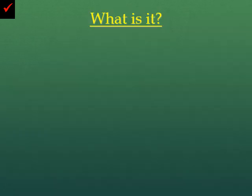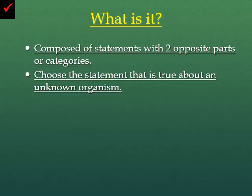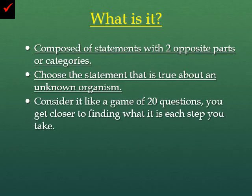So what is a dichotomous key? Dichotomous keys are often composed of statements with two opposite parts or categories. You're going to choose the statement that is true about whatever unknown organism you're currently looking at, and these are all based upon physical traits that you can actually see. Consider it like a game of 20 questions — you get closer to finding out what it is with each question you answer and each step you take.